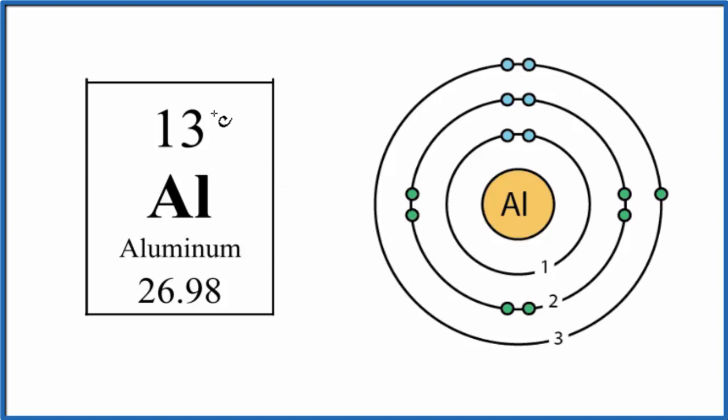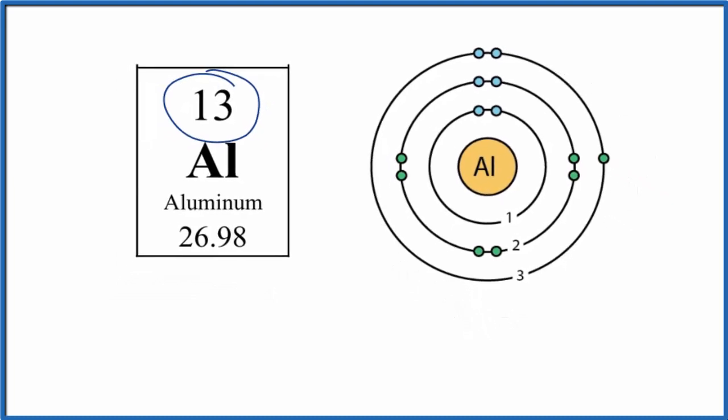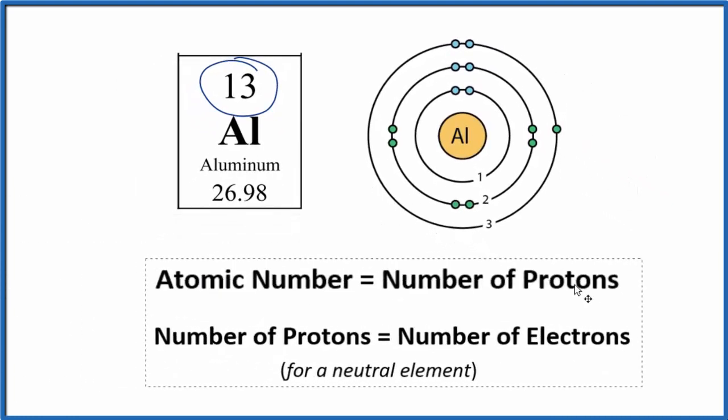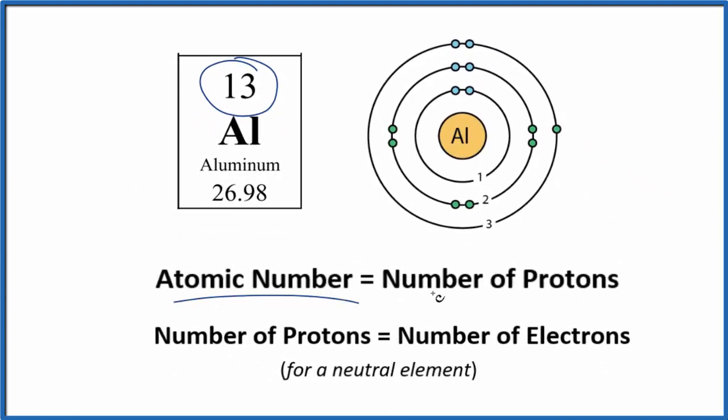So starting out, if we look at aluminum here, it has an atomic number of 13. What that means is the atomic number equals the number of protons. So we have 13 protons here in the nucleus of the aluminum atom.